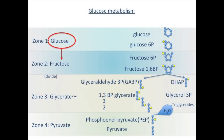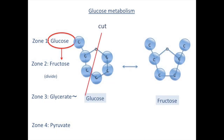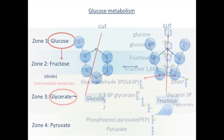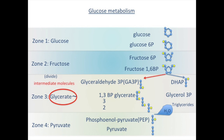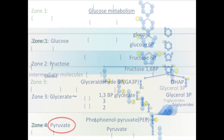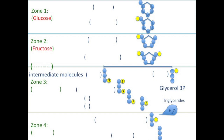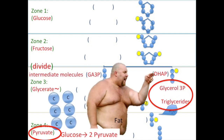Glucose is converted to fructose to prepare to divide into pieces. Don't you think the fructose structure is better than glucose? Glyceride, an important biochemical intermediate in glycolysis, an important molecule for biosynthesis of triglyceride as well, and it's converted to pyruvate. Glucose, fructose, divide, dump, GAP, glyceride, pyruvate.